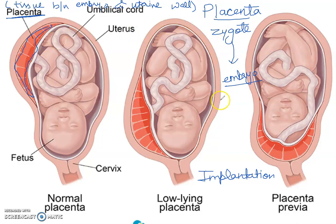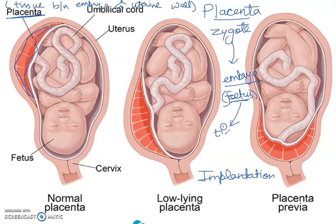This developing embryo is also known as the fetus. When the embryo takes the characteristic human form, it is called fetus till birth. Placenta consists of fetal as well as maternal tissues.